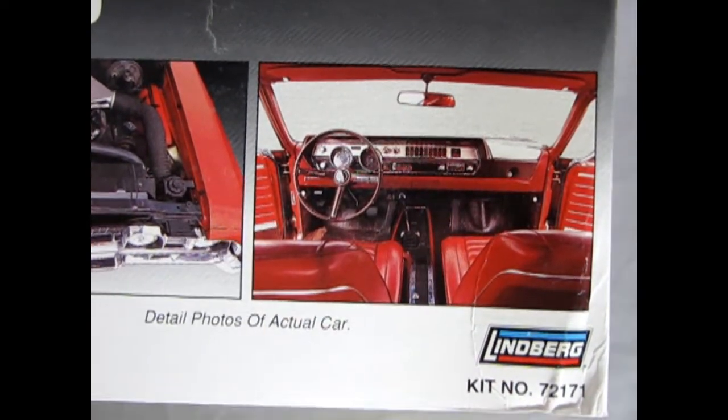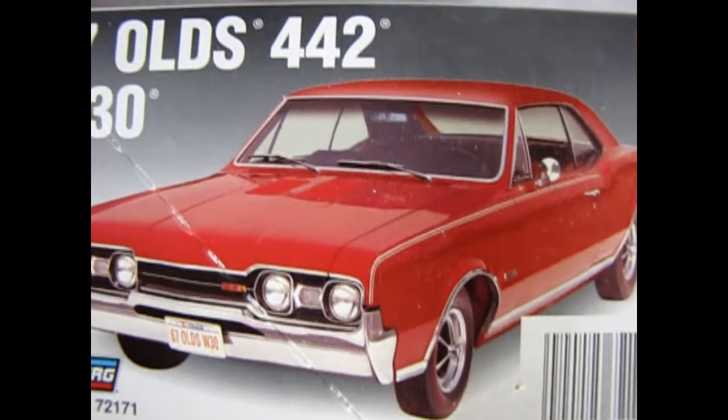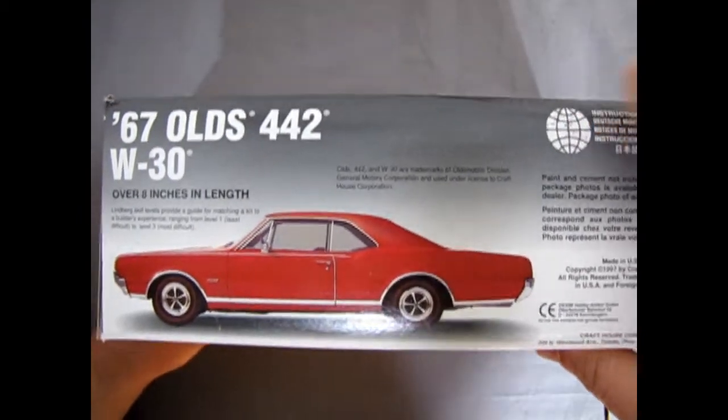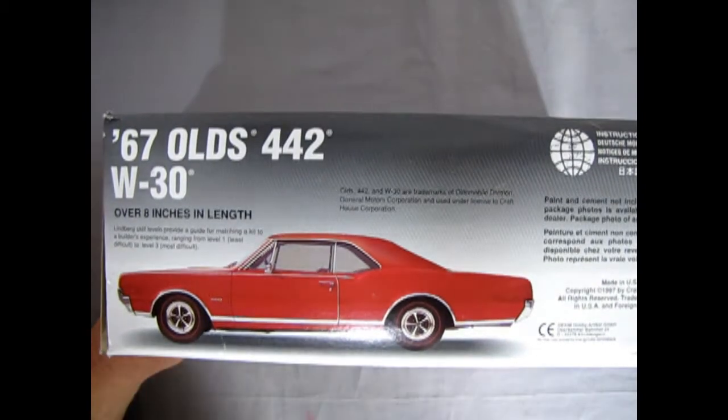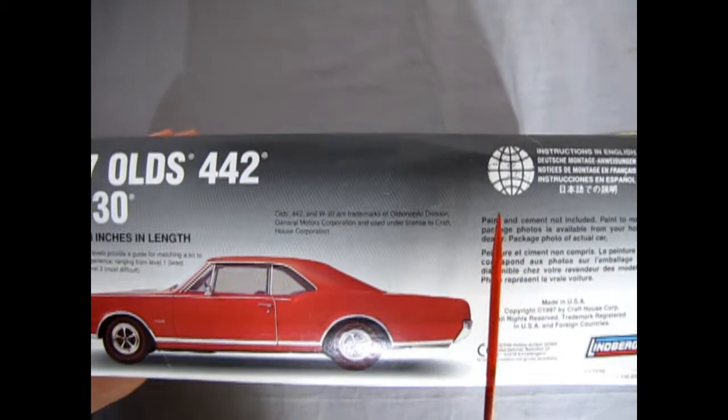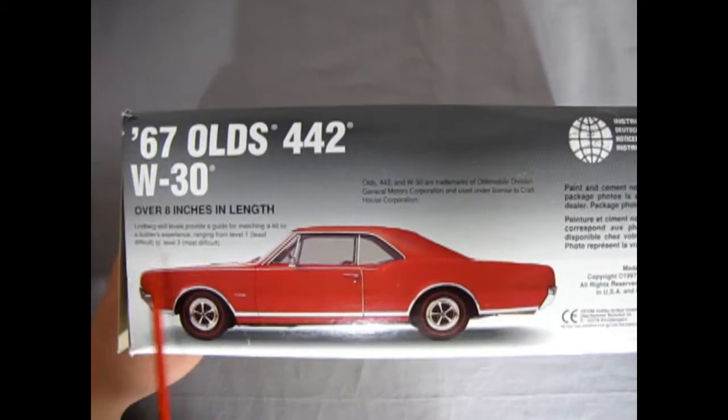Okay, and then there's the interior going in there. Let me just kick this back a little bit. The end of the box, of course, looks like the top of the box. And then here we get the side view profile of the car. And then paint and cement not included. There's the world symbol, Lindbergh again. Over 8 inches in length.